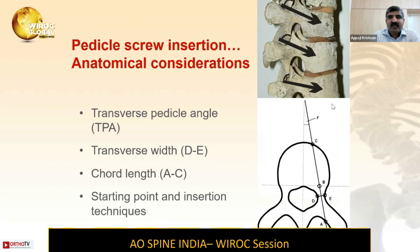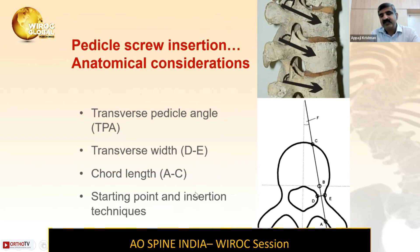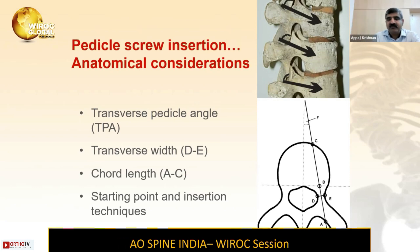After exposure, for an open thoracic pedicle screw you have to consider four important anatomical issues. One is the transverse pedicle angle — the angle between the entry point and into the body. The second is the transverse width, which is the width of the pedicle. The third is the chord length, which is the entry point to the tip of the screw. The fourth is the starting point and the insertion technique. The entry point and other considerations are slightly different from lumbar pedicle screws.